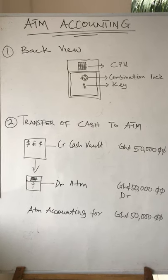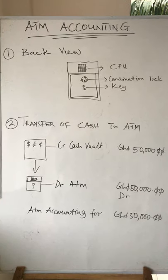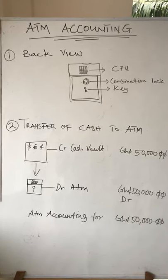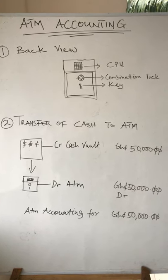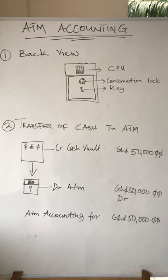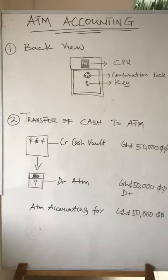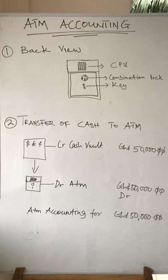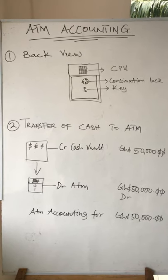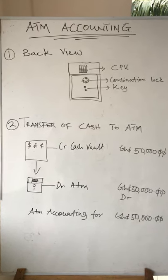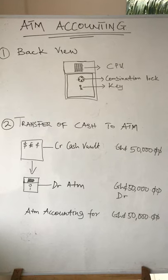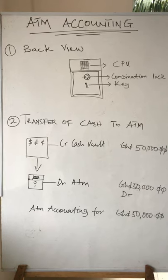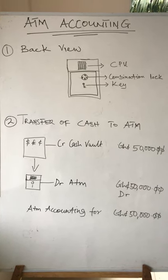In accounting, you debit the ATM and credit the cash vault. The money that will be accounted for is the 50,000 Ghana cedis, 50,000 dollars, or 50,000 pounds that was moved from the cash vault to the ATM.